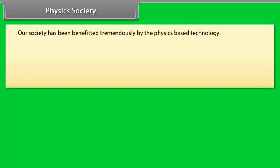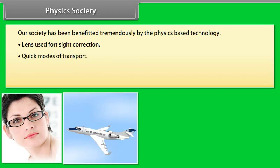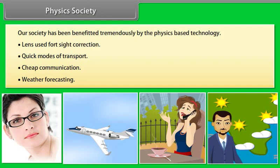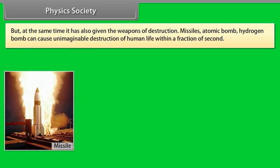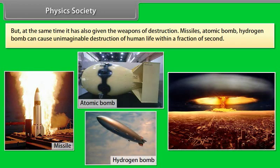Physics society. Our society has been benefited tremendously by physics-based technology. Lens used for sight correction, quick modes of transport, cheap communication, weather forecasting are some new dimensions of progress due to physics. But at the same time, it has also given the weapons of destruction. Missiles, atomic bomb, hydrogen bomb can cause unimaginable destruction of human life within a fraction of second.